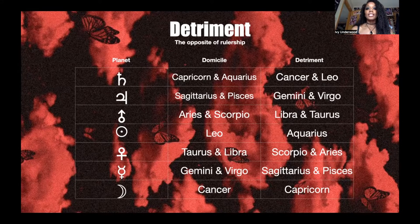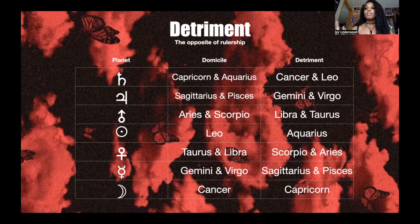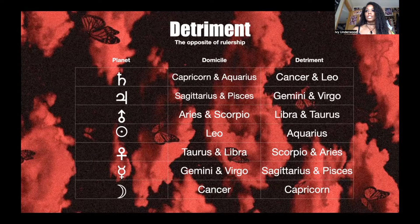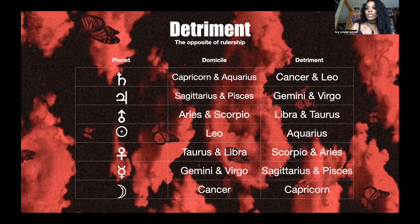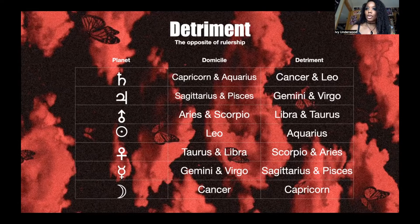Saturn is in domicile in Capricorn. The opposite of Capricorn is Cancer, so Saturn is in detriment in Cancer. It's really important to think in terms of opposites and likeness in astrology, so you can know when a planet is comfortable and functioning the way it wants to, and when a planet is uncomfortable, being harmed, or representing challenging themes in your chart.